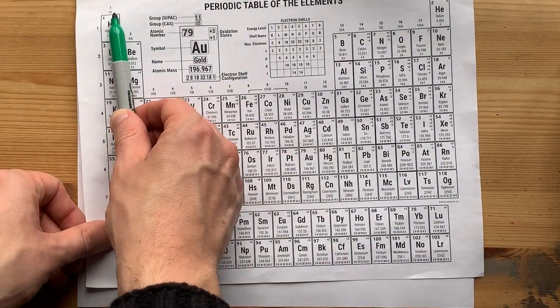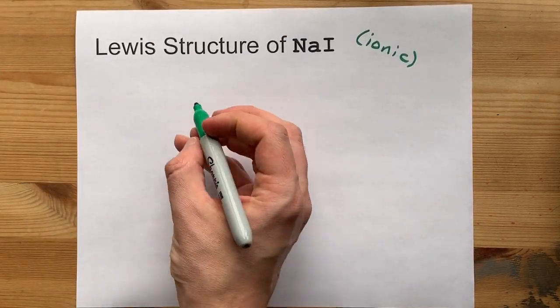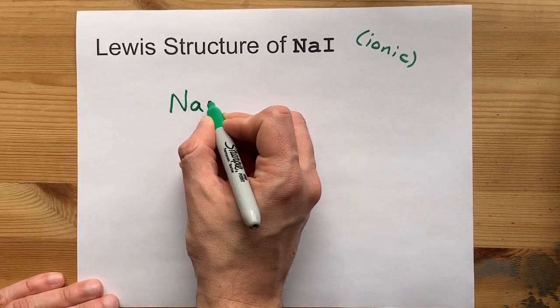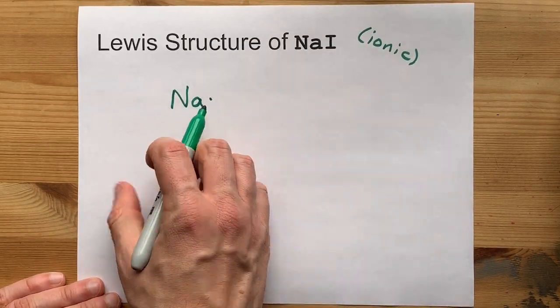Sodium is in group one, so it brings one valence electron. I'm going to write its symbol here with one dot. One valence electron.